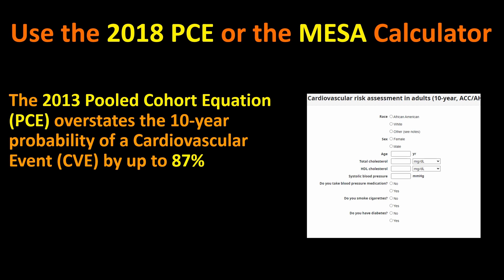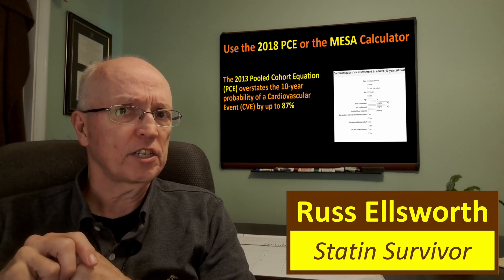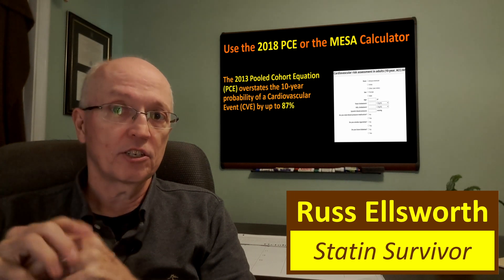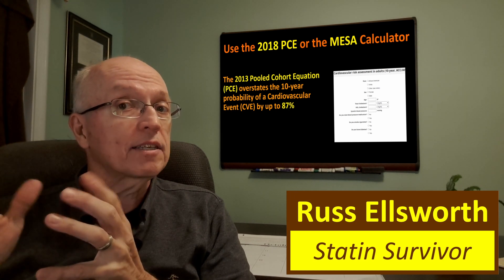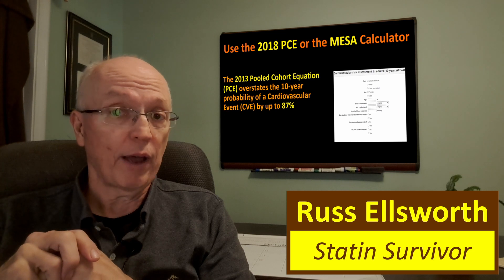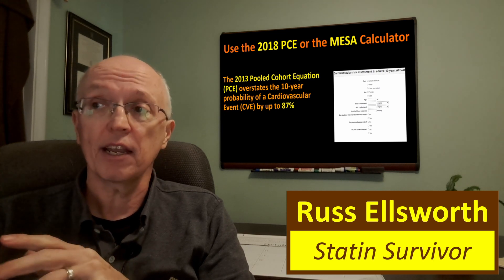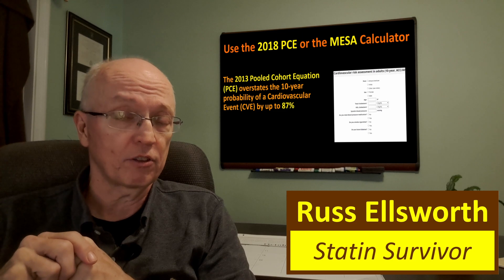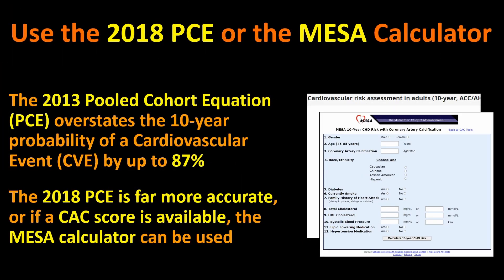So what does that do? It overstates your risk. What would be the advantage of overstating your risk? It makes it more likely that you're going to be prescribed statins. I always wonder why the American Heart Association still has that calculator up there instead of the more accurate one. You can't tell by looking at the inputs which it is — you have to do a little research. If you use the 2018 pooled cohort equation it's far more accurate and for most of us gives a far lower score.